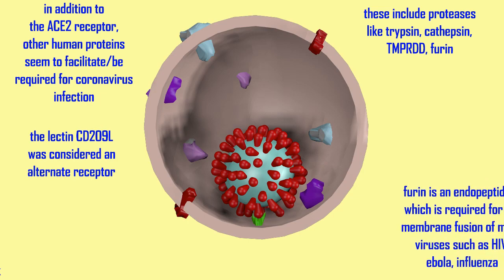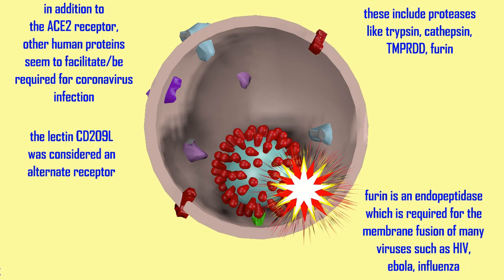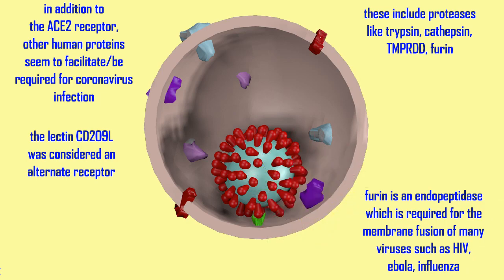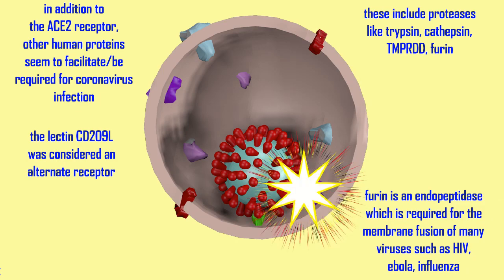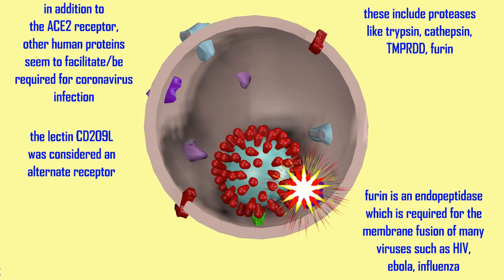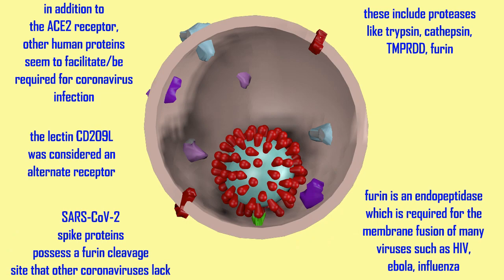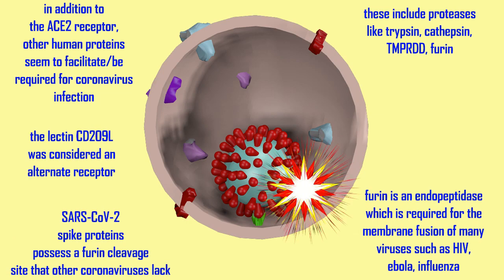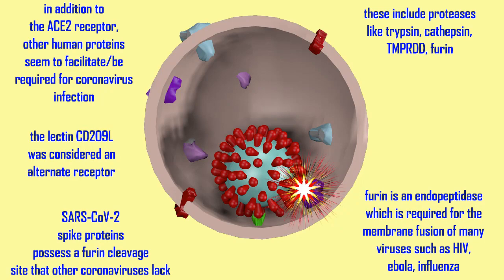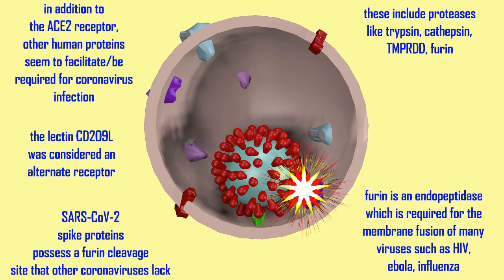Other proteins, such as some membrane proteins known as lectins, can also facilitate the virus. One, CD209L, was originally thought to be an alternate receptor for coronavirus, because cells which were transfected with this lectin could then be infected by coronavirus which otherwise could not be. It is no longer considered to be an alternate receptor, but rather a glycoprotein which facilitates infection.